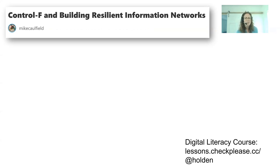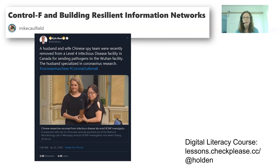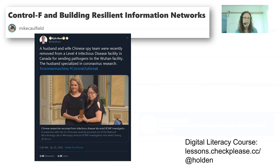The article 'Control F in Building Resilient Information Networks' by Mike Caulfield — who is an expert that studies digital literacy — is at least five or six weeks old. He shared this example of a tweet with over 3,000 retweets and 4,000 likes that claimed, falsely, that a husband-and-wife Chinese spy team were recently removed from a level-4 infectious disease facility in Canada for sending pathogens to the Wuhan facility.